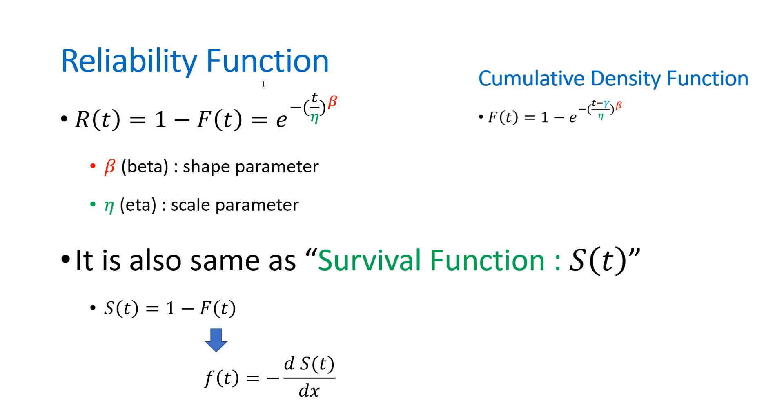Reliability function. Actually, the concept of reliability function is important. And also, it is same as survival function S(t). So R(t), capital R(t), can be calculated by 1 minus capital F(t), cumulative Weibull distribution. And S(t) is actually same as R(t). And if you consider derivative of capital F(t), then small f(t), PDF, can be calculated by negative S(t), the derivative form about X.